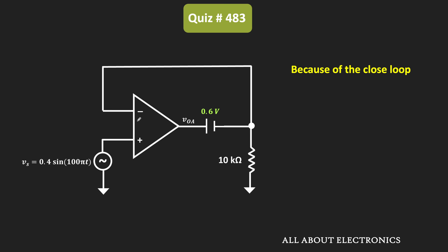So for the op-amp, as you know, whenever it operates in the negative feedback configuration, we can apply the concept of the virtual ground. That means now in this condition, this V- will be the same as V+. So whenever this Vs is equal to 0.4V, then the voltage at this node will also be equal to 0.4V, and the same voltage will also appear over here. That means the voltage over here is also equal to 0.4V.